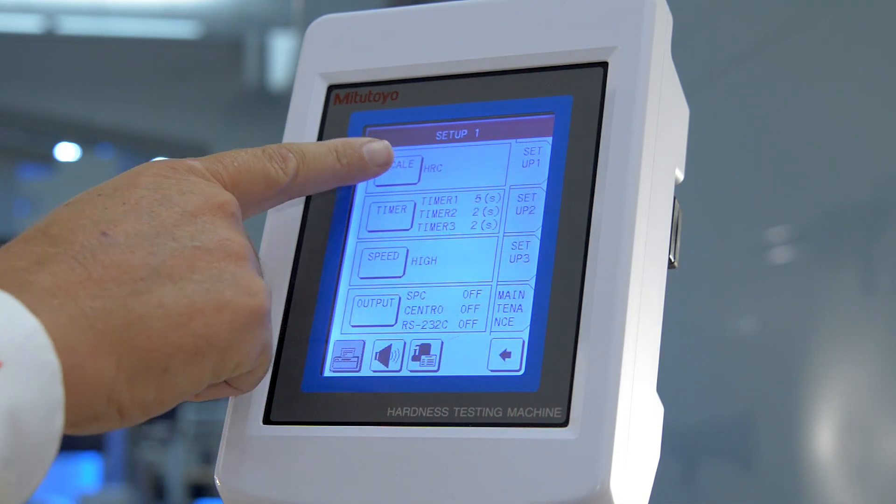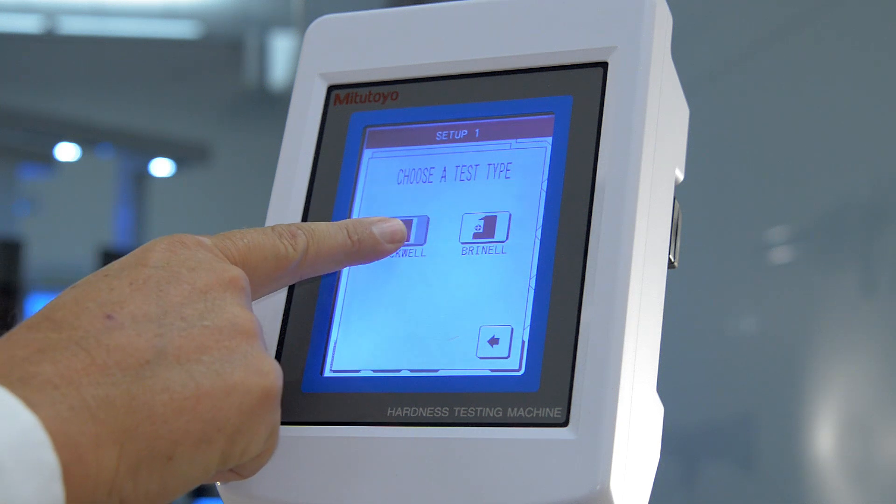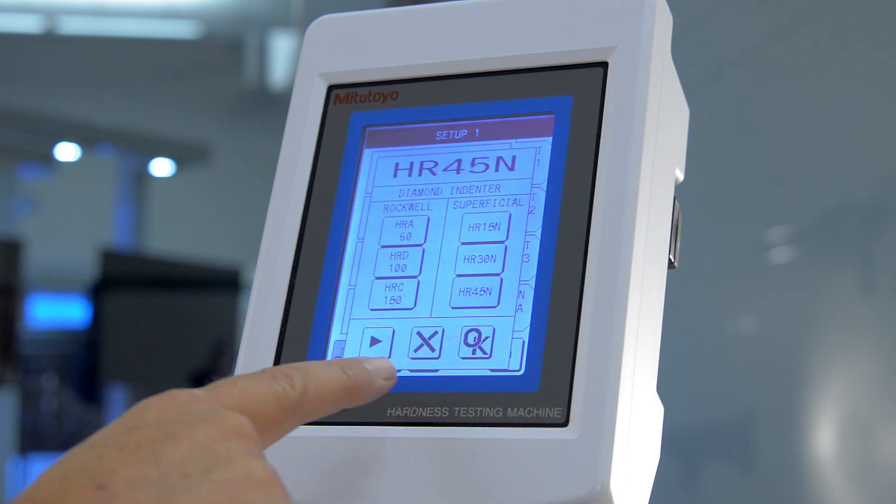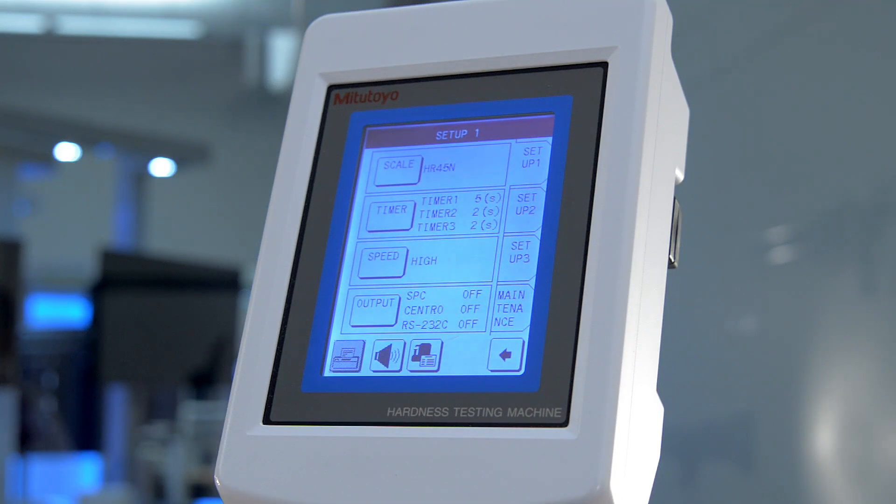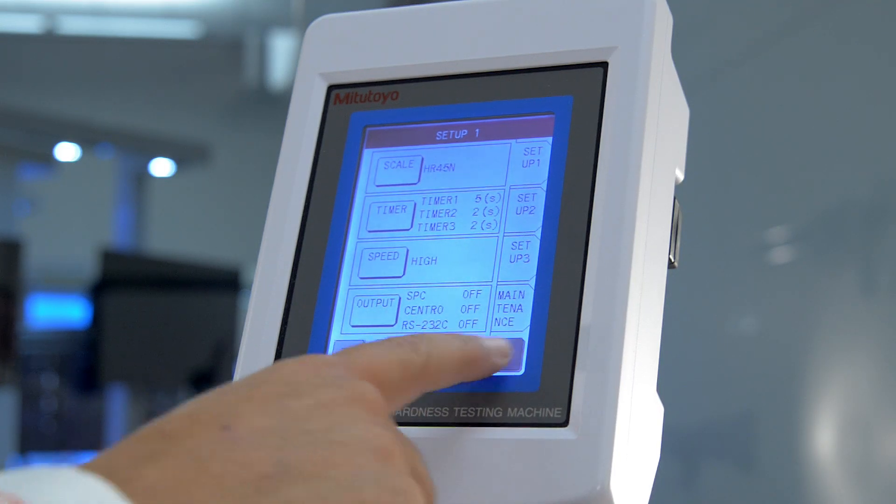So changing from HR-C to HR-45N is on the same screen. A power elevating screw model is also available, but the ease of use of HR-521 makes it the most popular model we offer.